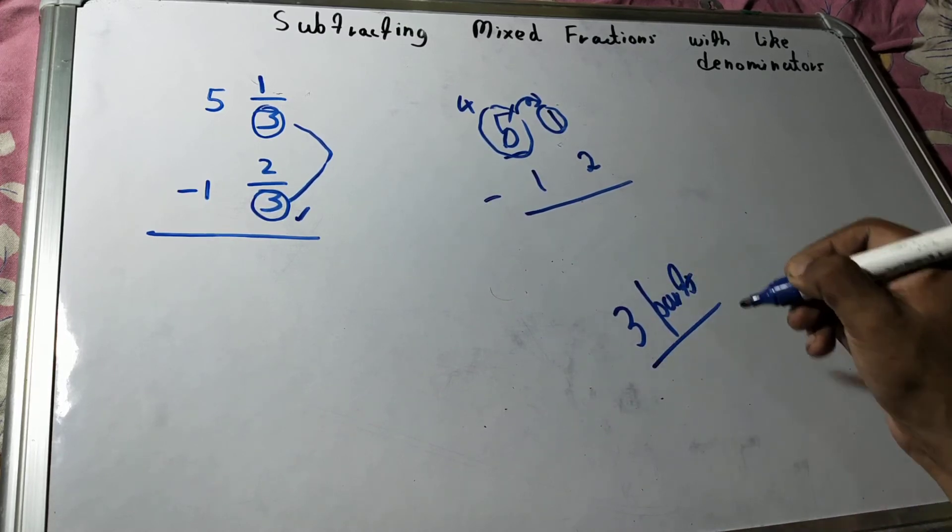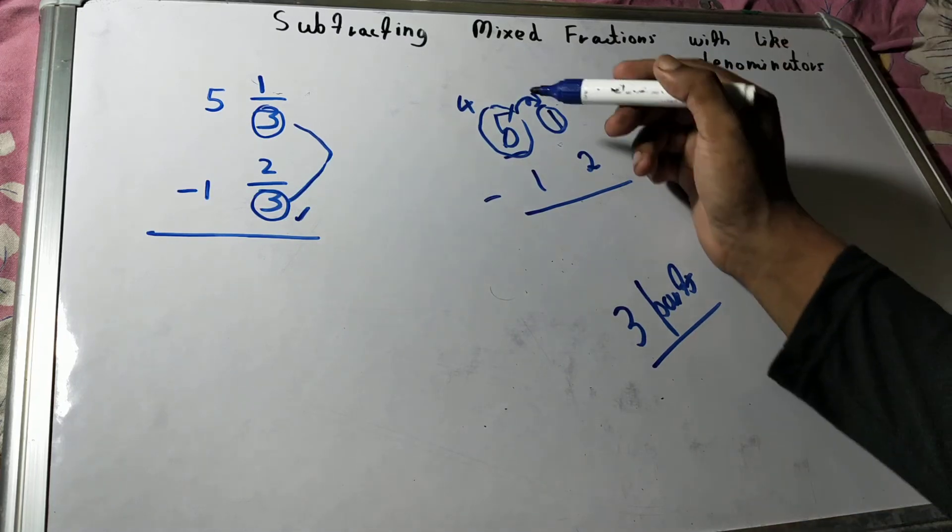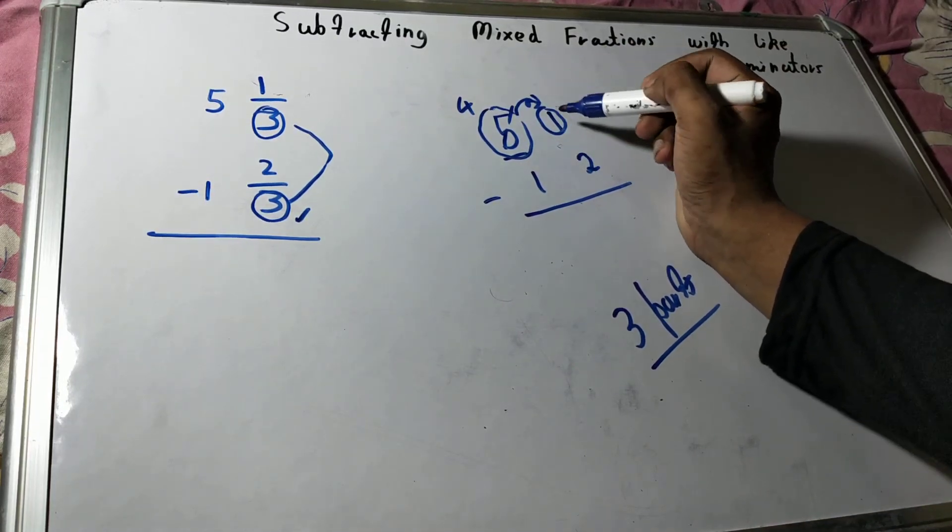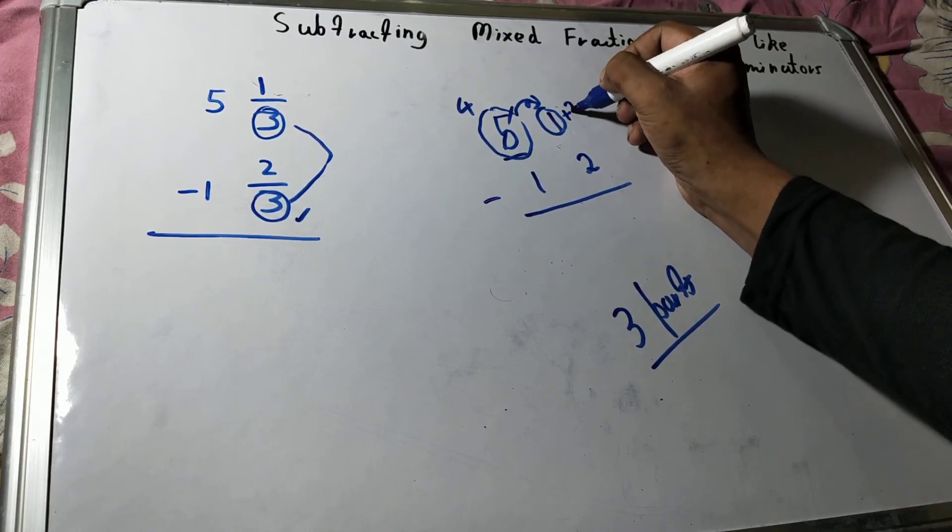The denominator says the total number of parts. So if you take a borrow from here, it is not a borrow of 10. It is a borrow of 3.